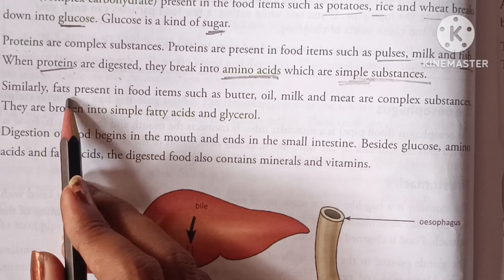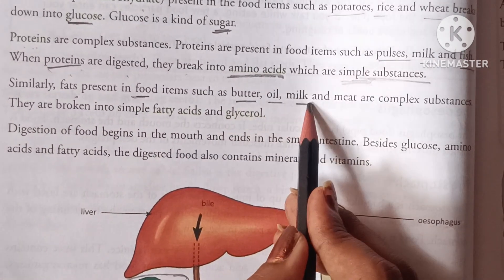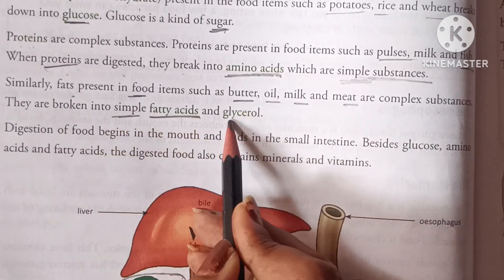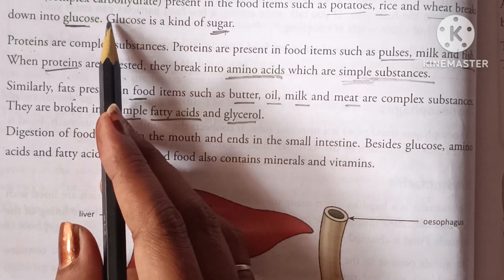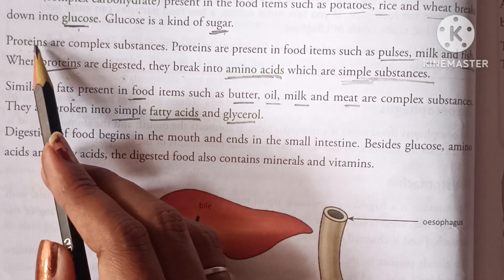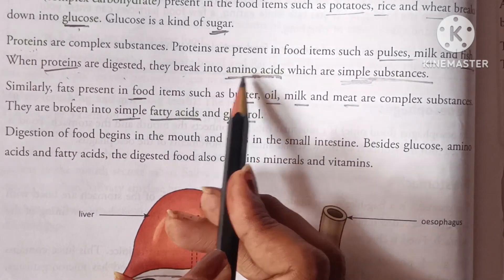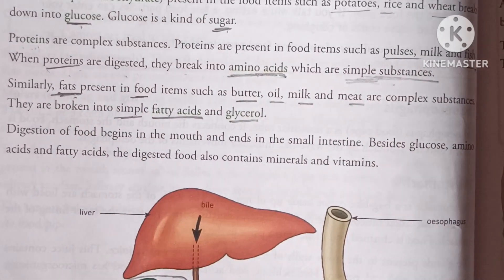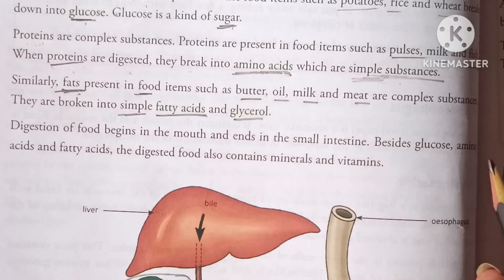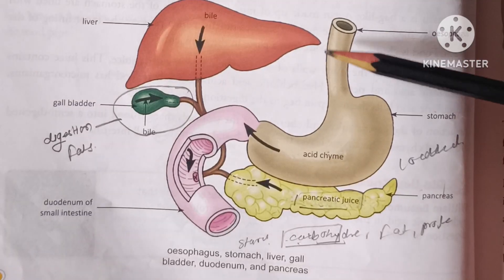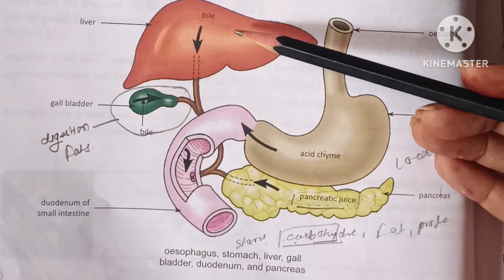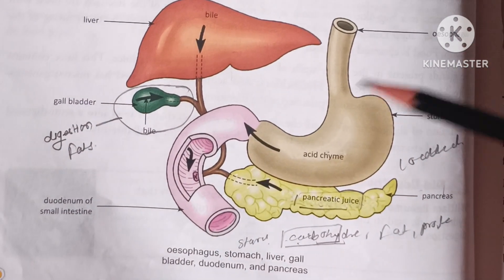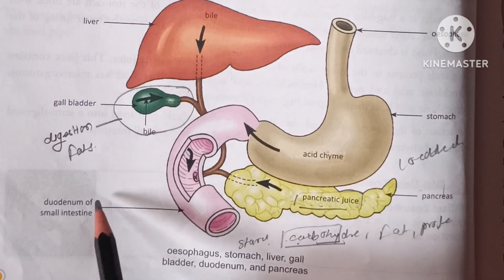Fats are broken down into fatty acids and glycerol. So carbohydrates become glucose, proteins become amino acids, and fats become fatty acids and glycerol. This is the structure showing the esophagus, stomach, liver, gallbladder, duodenum, small intestine and pancreas.